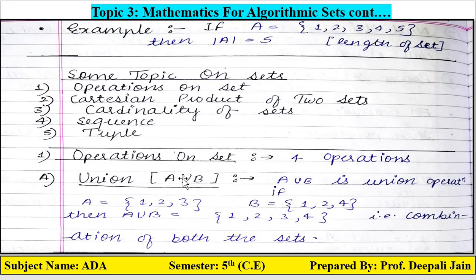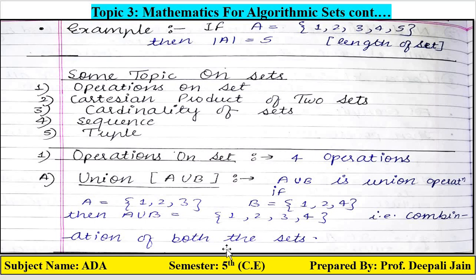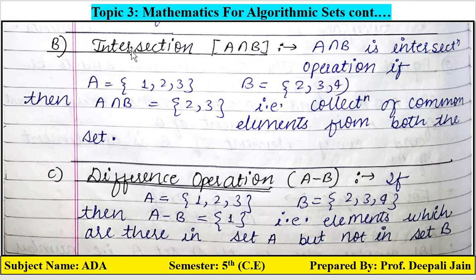First operation is union. You have already studied set theory in mathematics in semester four. Union is written as A ∪ B. If A = {1, 2, 3} and B has other elements, then A ∪ B gives you the combination of all elements from both sets — that is, the combination of both the sets is present inside the union.